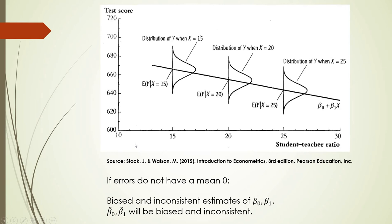What happens if we don't have this case? For example, if the distribution curve is shifted or skewed to the left or to the right, then we will get biased and inconsistent estimates of beta 0 and beta 1. Our estimates beta 0 hat and beta 1 hat will be biased and inconsistent — in other words, our model will be bad and not good enough.